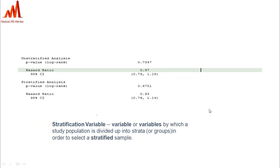The remaining table requires populating unstratified and stratified analysis. For unstratified analysis, the p-value is displayed using the Logrank method, along with the hazard ratio and 95% CI. Similarly, for stratified analysis, the p-value, hazard ratio, and 95% CI are displayed. Stratified variables are the variables by which the study population is divided into strata or groups, as decided by the statistician in the SAP. The comparison is between the XX and YY treatment groups.